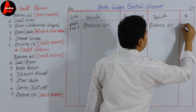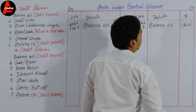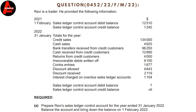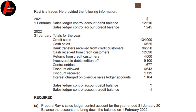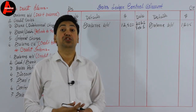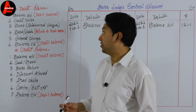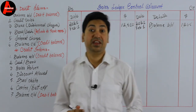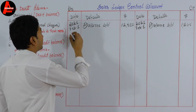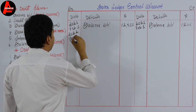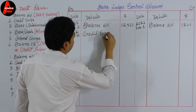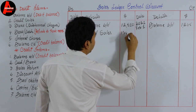Our next transaction is dated 2022, 31st January. We have credit sales of $134,000. Credit sales will always be recorded on the debit side of the sales ledger control account. So we write the date 2022, January 31st, and record credit sales: $134,000.